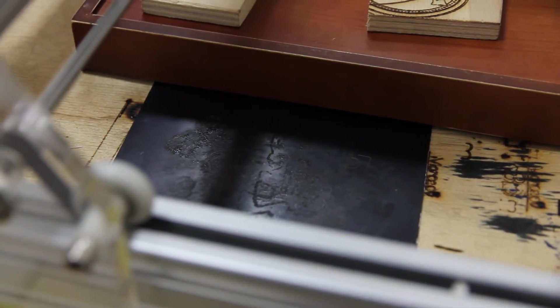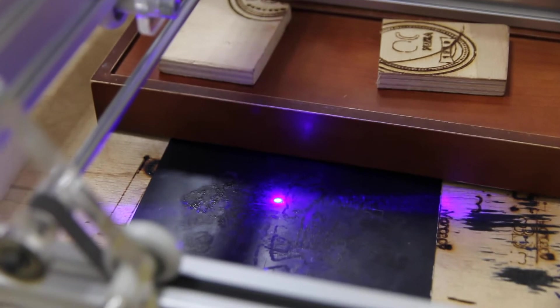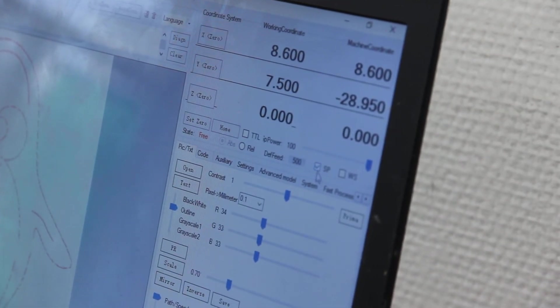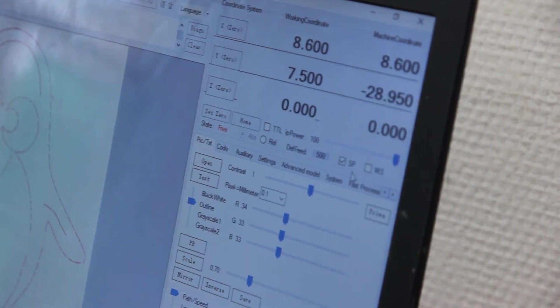We're going to use this anodized aluminum plate for focusing. We use CNC Laser X software - you press a button or press P and turn it on, and you can see the laser beam is here.